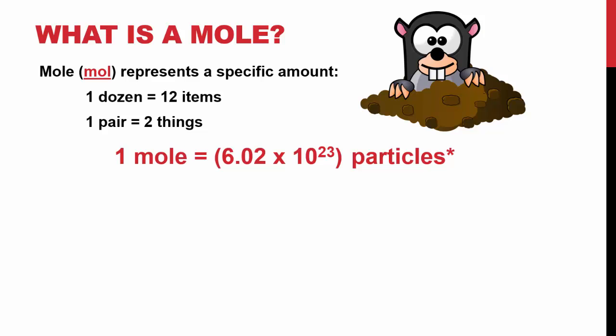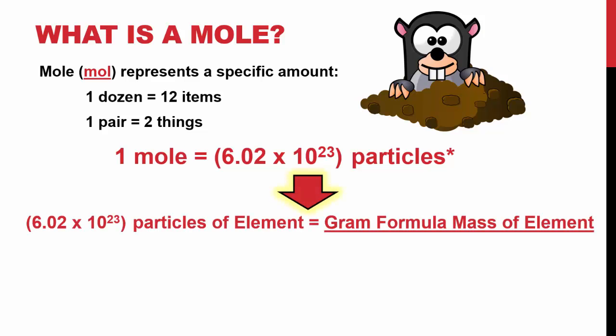Because we know this fact, we can also state that 6.02 times 10 to the 23rd particles of a given element is what we call the gram formula mass of an element. Or we can also say that one mole is equal to the gram formula mass.